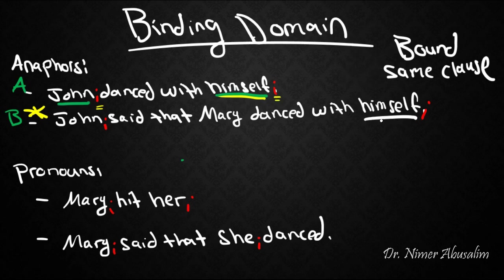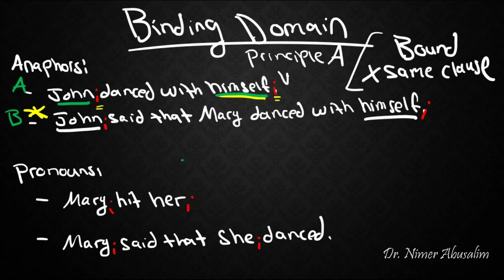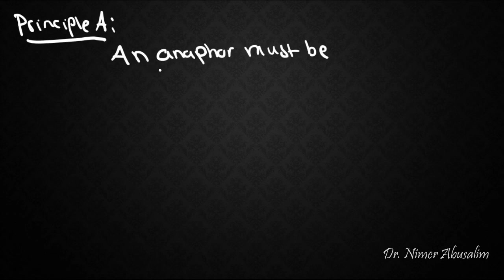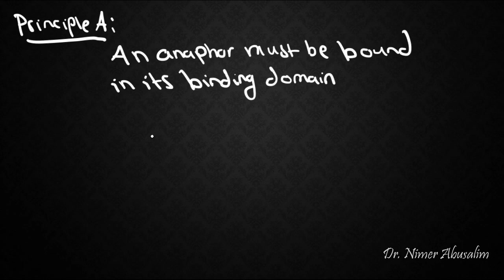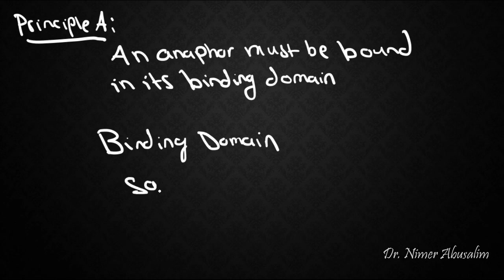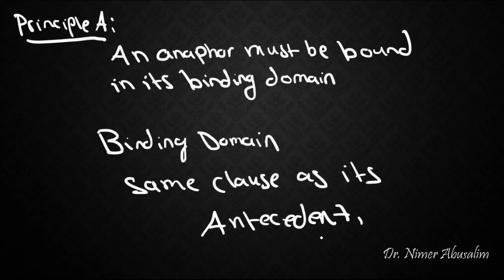In the second sentence, we ask: are 'himself' and John in the same clause? No. Therefore we don't even need to check the second condition — Principle A has already been violated. That's why the sentence is ungrammatical. We can now refine Principle A: an anaphor must be bound in its binding domain, which is the same clause as its antecedent.